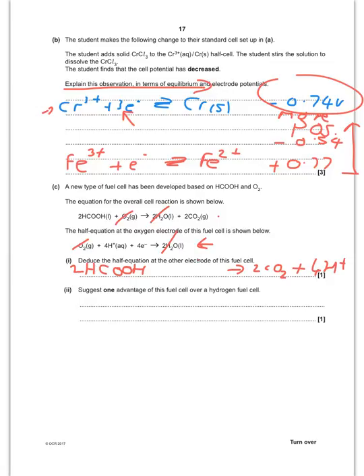And then finally you need to look at your equations, your electrons rather. So you've got four electrons there, so you're going to have four electrons there as well to add on. So you can simplify that by dividing by two if you like, to give you HCOOH goes to CO2 plus 2H plus plus two electrons.